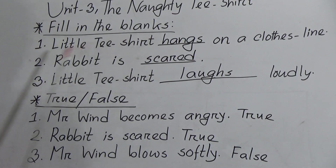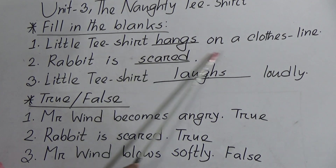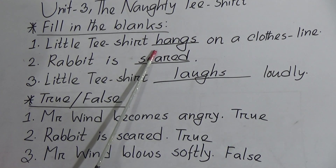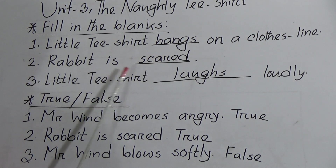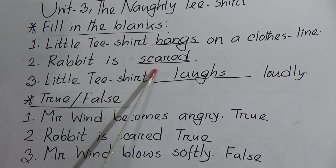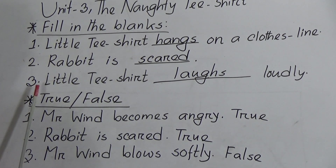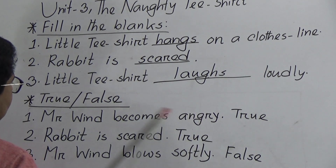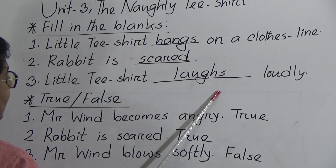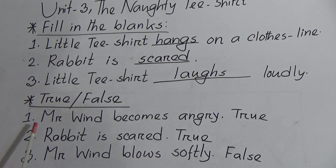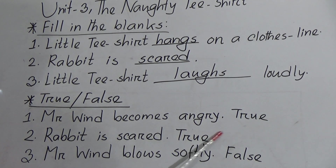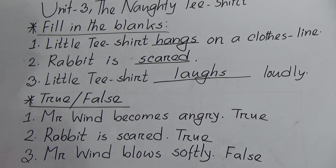Let's review. Fill in the blanks: number one, little t-shirt hangs on a clothesline; number two, rabbit is scared — rabbit is afraid, frightened, S-C-A-R-E-D; number three, little t-shirt laughs loudly, L-A-U-G-H-S. True/false: number one, Mr. Wind becomes angry — true; number two, rabbit is scared — true; number three, Mr. Wind blows softly — false, because Mr. Wind blows hard, very strongly.